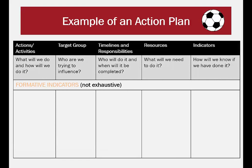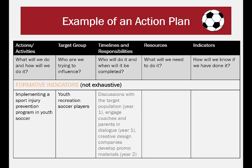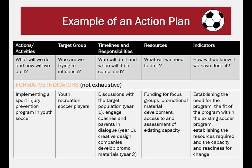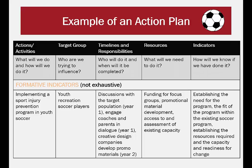Here is an example of an action plan. Let's walk through it together, starting with the formative indicators. Actions/activities: We will be implementing a sport injury prevention program in youth soccer. Target group: Youth recreation soccer players. Timelines and responsibilities: In year one, we will have discussions with the target population and engage coaches and parents in dialogue. In year two, creative design companies will develop promo materials. Resources: We will need funding for focus groups, promotional material development, and access to an assessment of existing capacity. Indicators: We have finished the action plan if we have established the need for the program and the fit of the program within the existing soccer program, and if we have the resources required and the capacity and readiness for change.